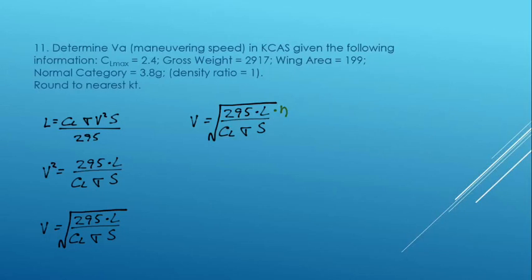Start with the lift formula. Solve it for velocity. Simply take that lift formula, solve it for velocity. Then we are going to simplify that formula so that we don't have the square on the velocity. So that puts the square root on the rest of the formula. And then we add in this load factor.